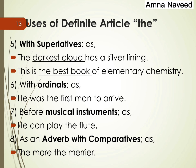While we use 'a' with cardinal numbers, we use 'the' with ordinal numbers — first, second, third, fourth, fifth, last, etc. For example: 'He was the first man to arrive' and 'Who was the last student who joined the class?' We also use 'the' before the names of musical instruments — for example: 'He can play the flute,' 'He can play the piano.' Similarly, we use 'the' before an adverb used with comparatives, as in the expression 'the more, the merrier.'